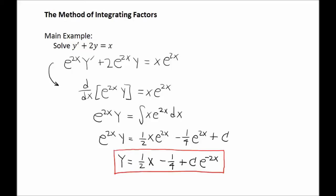Doing so gives us y equals one-half x minus one-fourth plus c times e to the negative 2x. This is our general solution for the differential equation. Notice that the process here was very similar to the first example, except for this initial step where we multiplied both sides by e to the 2x. In this case, the expression e to the 2x is what is called an integrating factor. Multiplying the equation through by e to the 2x was what allowed us to represent the left side of the equation as a derivative of something.